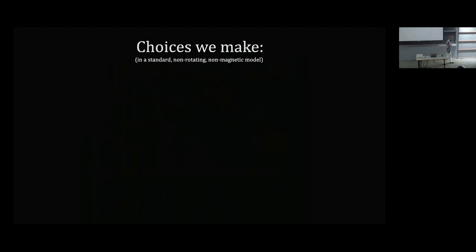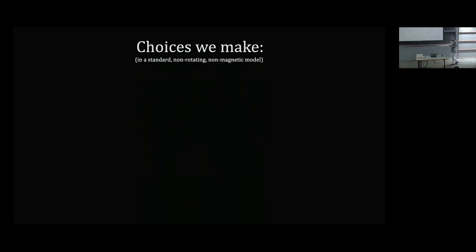We make a bunch of choices when we run any 1D model. Looking at the rest of this conference schedule — discussions about convection, angular momentum transport, 3D modeling — I think what's most useful to discuss now at the beginning is: what goes into the most vanilla, standard, non-magnetic, non-rotating, solar-like stellar model? What are the uncertainties there, how do we approach the problems we've encountered, and what wiggle room do we still have even in that extremely simple case?